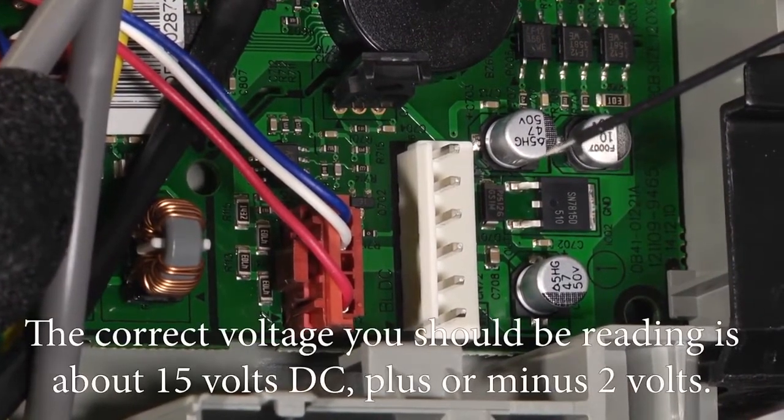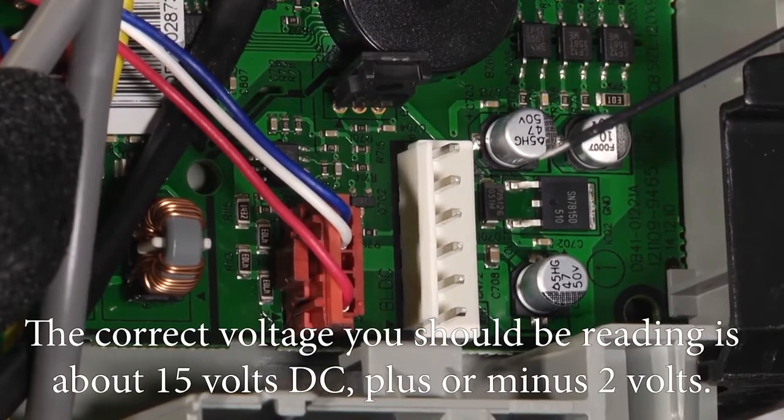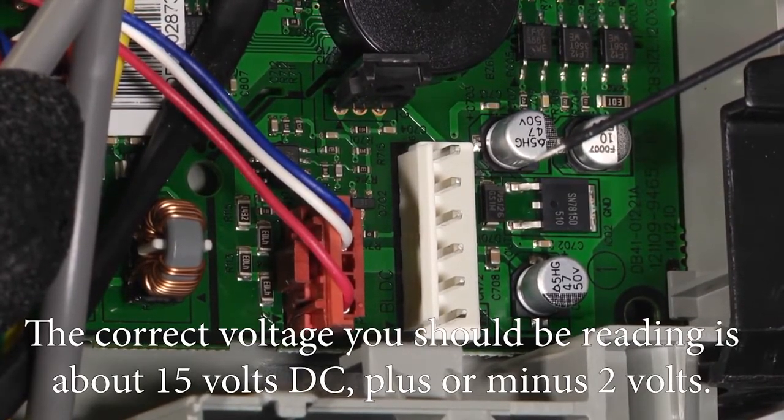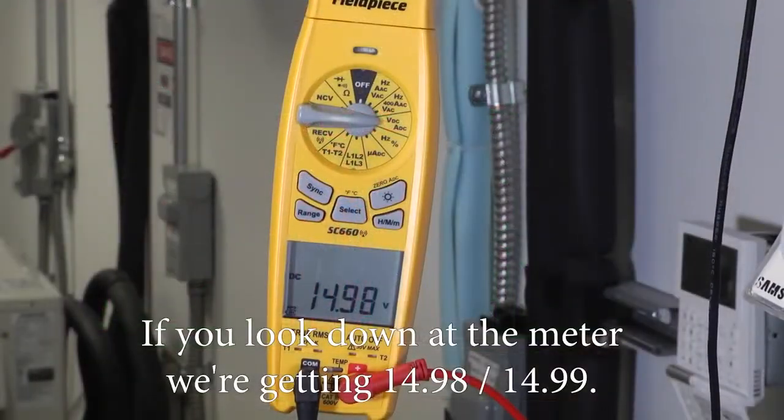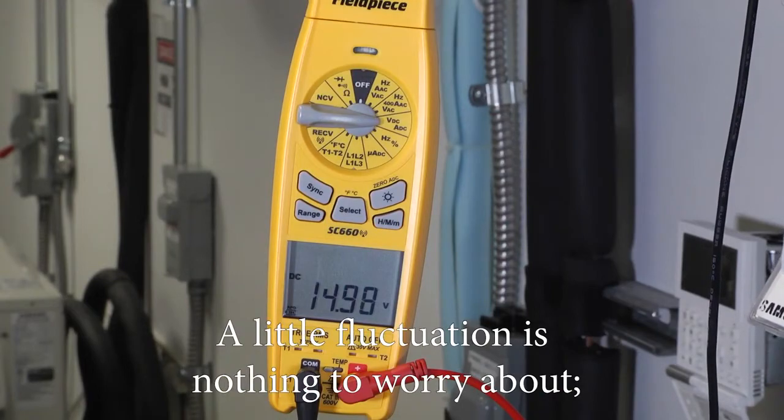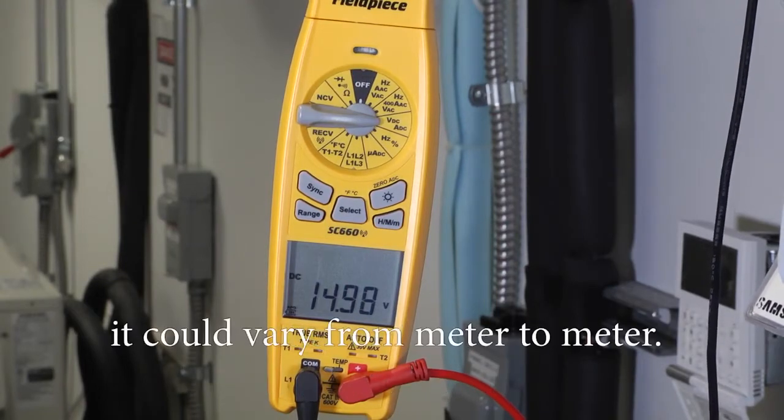The correct voltage you should be reading there is about 15 volts DC plus or minus two volts. If you look down at the meter, we're getting 14.98-99, a little fluctuation—nothing to worry about. It could vary from meter to meter.